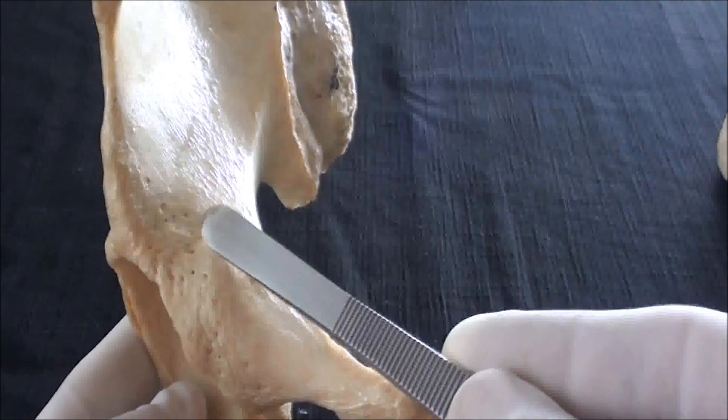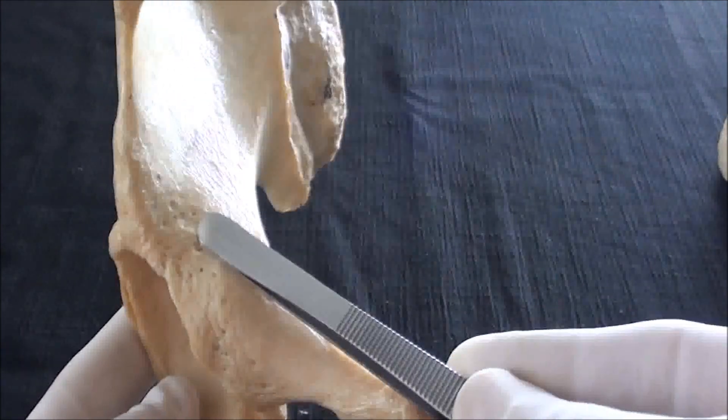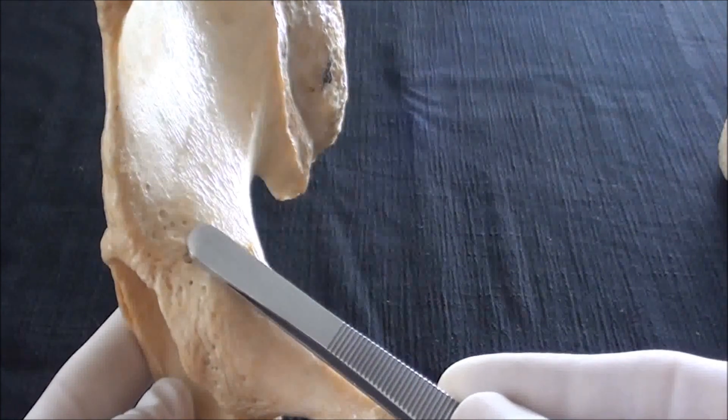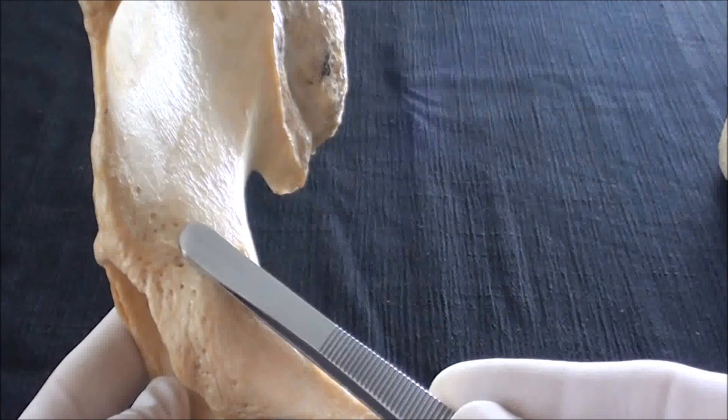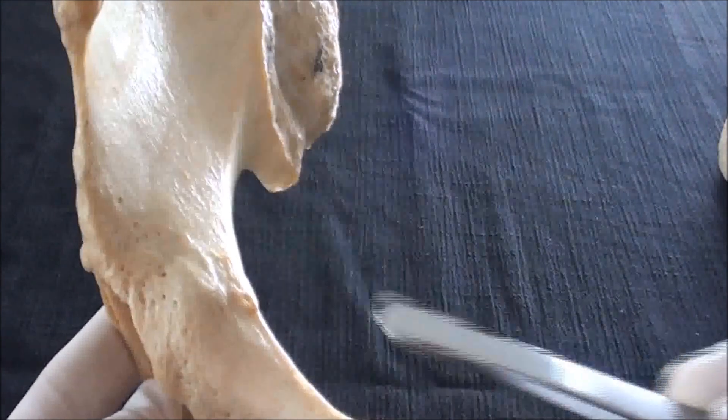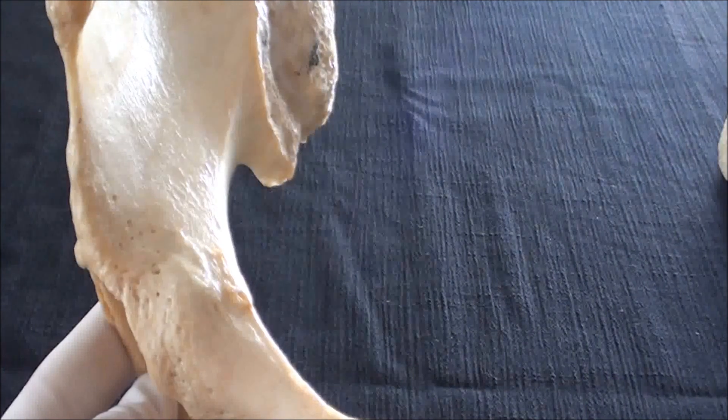If I put my forceps to identify the axis of pubis together with ischium, one will realize very quickly that these bones are oriented so that they go slightly anteriorly and medially in order to meet the pubic bone from the opposite side.